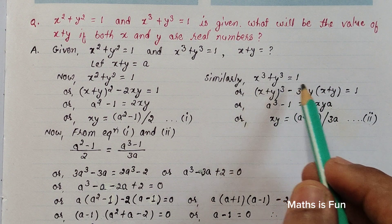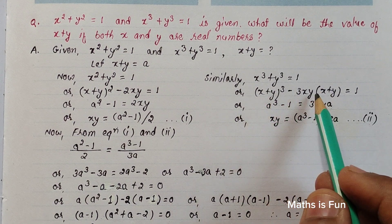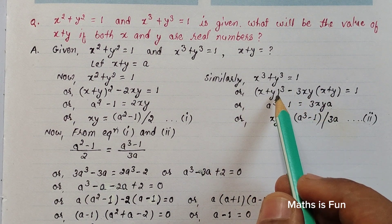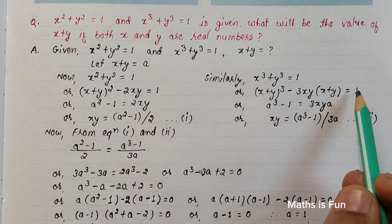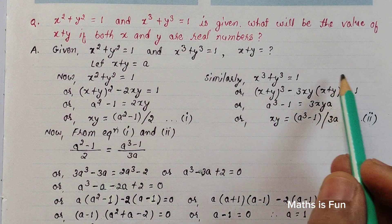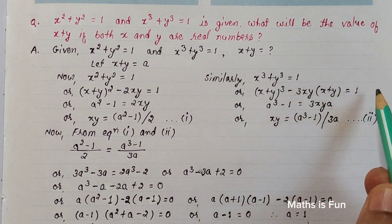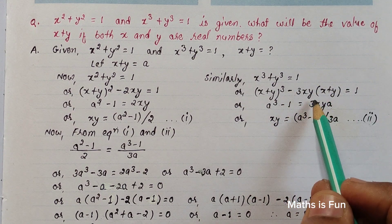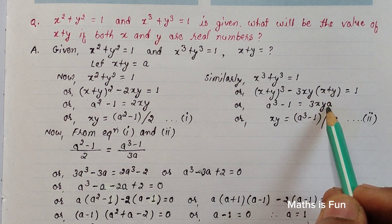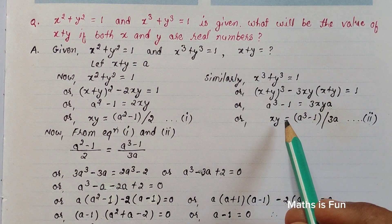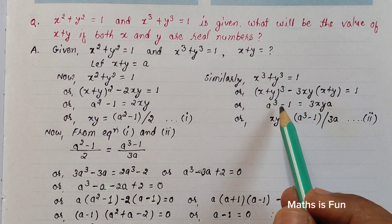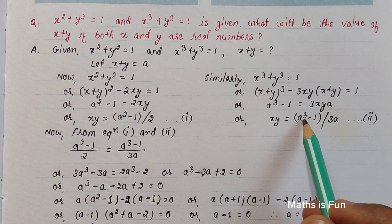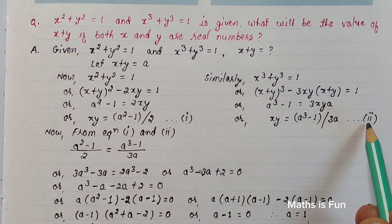Substituting x + y = a, we get a³ - 3xy·a = 1. Moving the 1 to the left gives a³ - 1 = 3xy·a. Dividing both sides by 3a, we get xy = (a³ - 1) / 3a. This is our second equation.